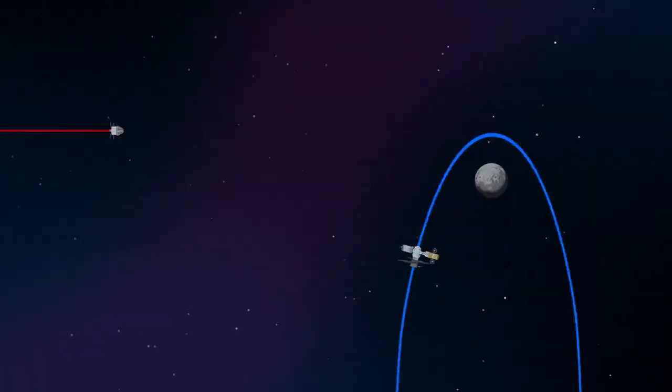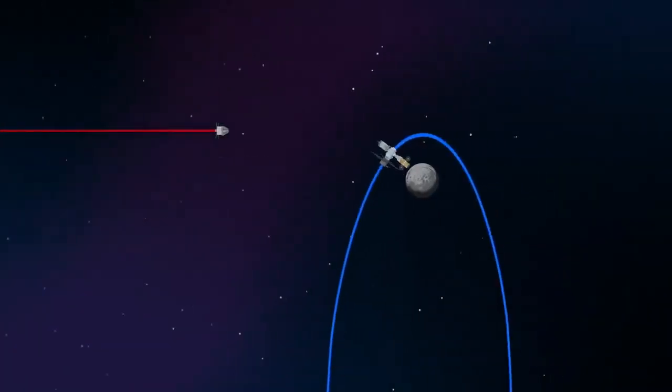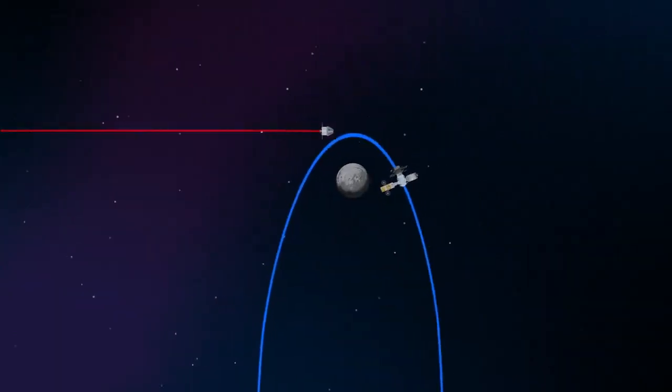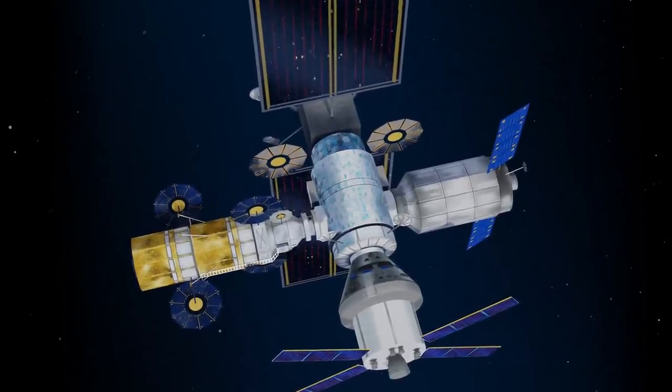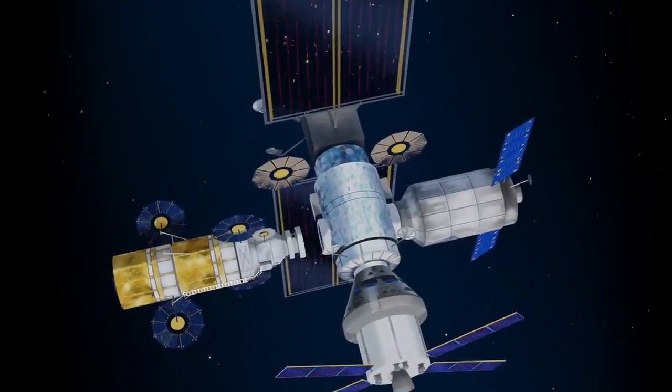Returning to our crew as they approach Gateway, the Orion must match the elliptical orbit of the station in order to successfully dock. Once on board, pre-selected crew members transfer to the lunar lander, while those assigned to Gateway remain on station.